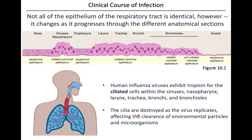Influenza virus primarily prefers to infect those varieties of ciliated epithelium, and there's quite a lot of that to choose from. As the virus infects those cells, it will actually destroy the cilia. The cilia's role is to sweep debris out of your respiratory tract. If those cilia are gone, bacteria aren't swept out anymore, and you're more likely to develop a bacterial pneumonia associated with that flu infection.